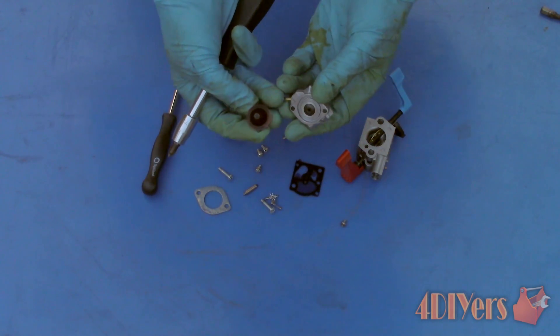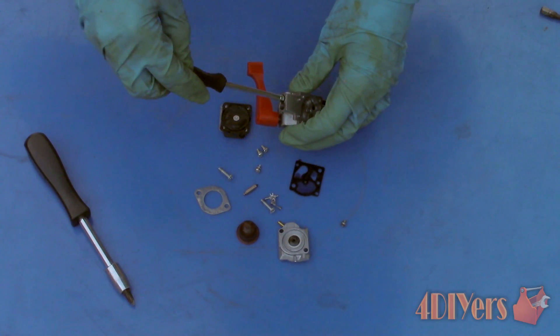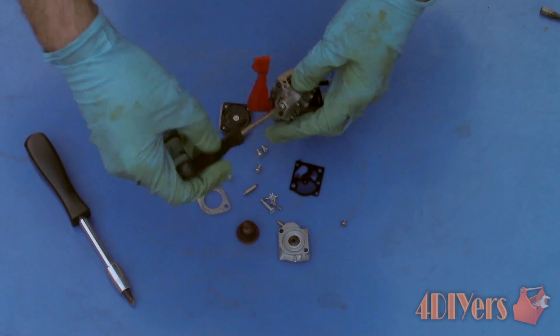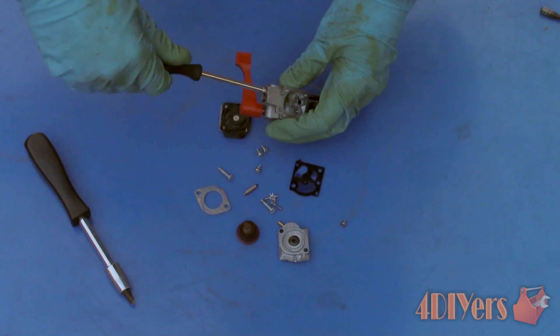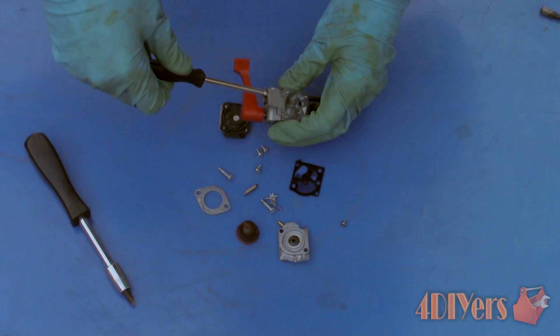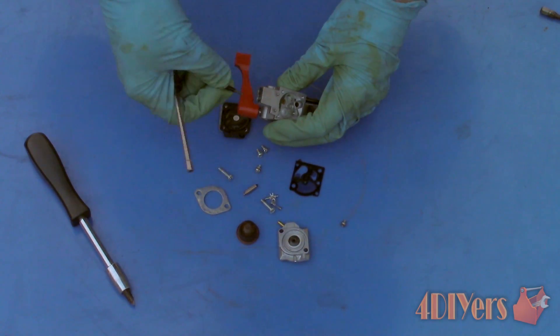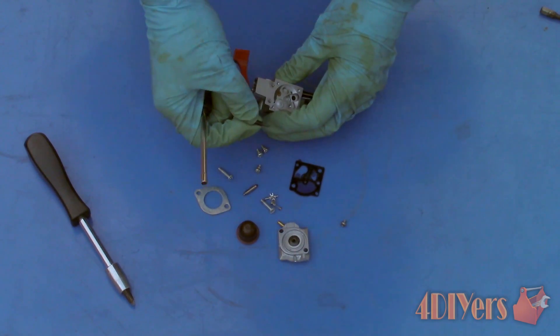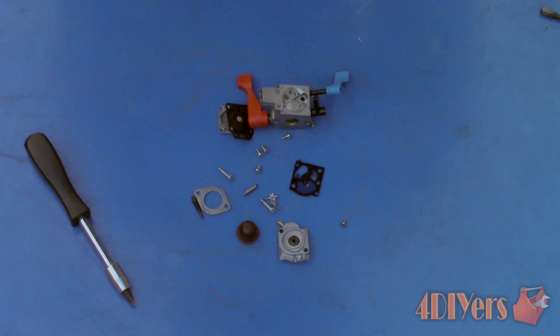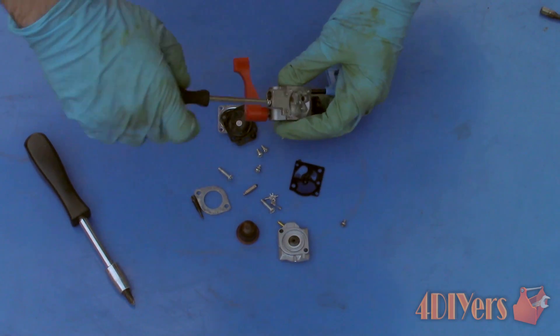Finally we will be removing the high and low speed jets. Some other models may only have a low speed jet. If you want to use the existing setting count the number of turns until it stops when tightening the two jets up before the removal. As a standard though it will be one and a half turns for the high speed jet and three quarters of a turn for the low speed. This will get you started but your carburetor will require some tuning as it won't run correctly. Depending on your model you may be required to use a special screwdriver to remove these jets. For this model here I am using a spline tool which can be purchased online at a small engine supplier.